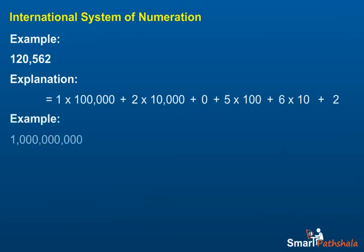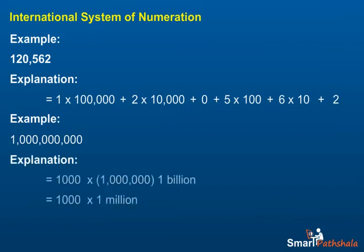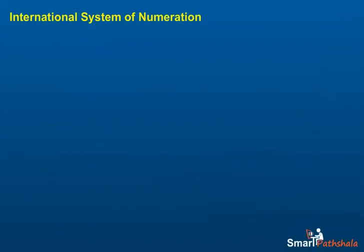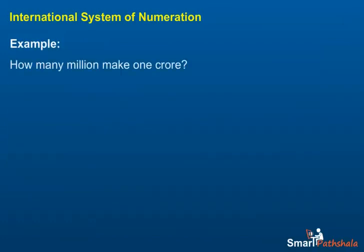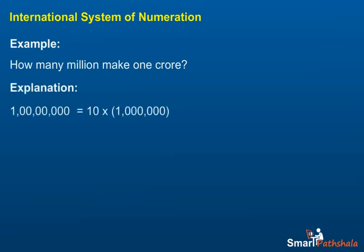Example: How many millions make one billion? One thousand million makes one billion. Example: How many millions make one crore? Ten million make one crore, as shown here.